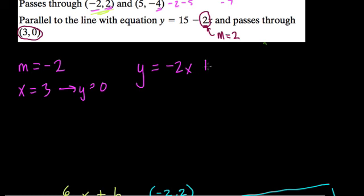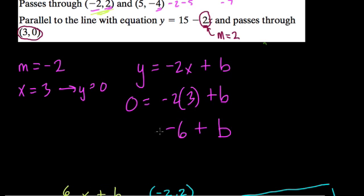y equals negative 2x plus b. Plug in the points. Well, x is 3. Negative 2 times 3 plus something needs to give us a y value of 0. So it's negative 6 plus b. This is a b value. Equals 0. Well, that means b is 6, because 6 plus negative 6 is 0. And that's our answer.